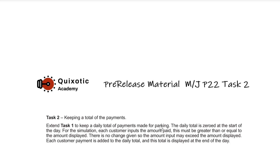The amount paid must be greater than or equal to the displayed amount. The displayed amount is the final price we calculated in Task 1. There is no change available, so the input may exceed the amount displayed. When the user gives input, we have to validate that it is not less than the final price — it can be greater than the final price but it cannot be less than it.